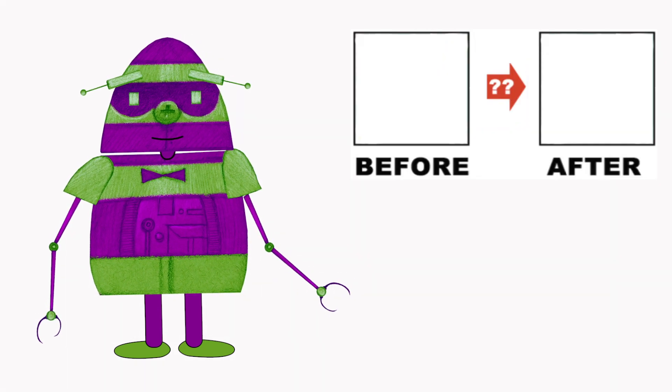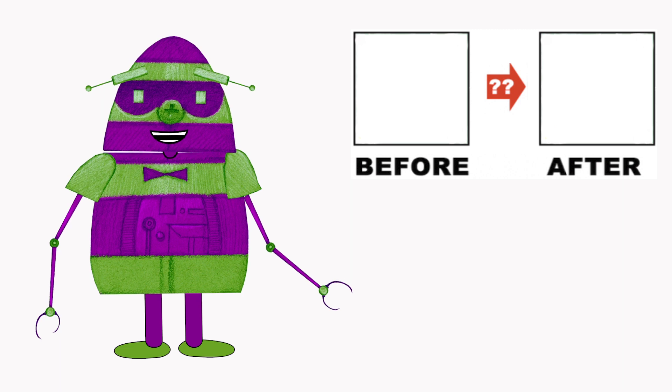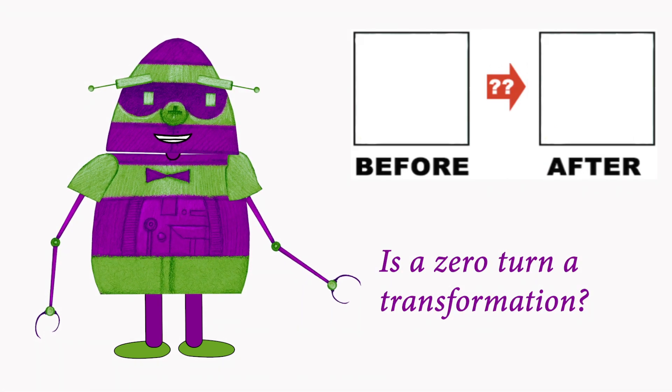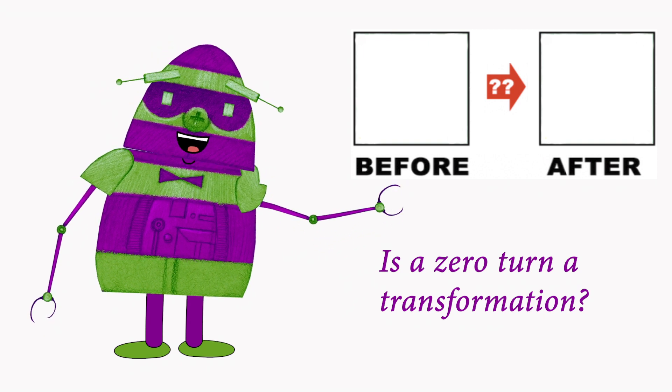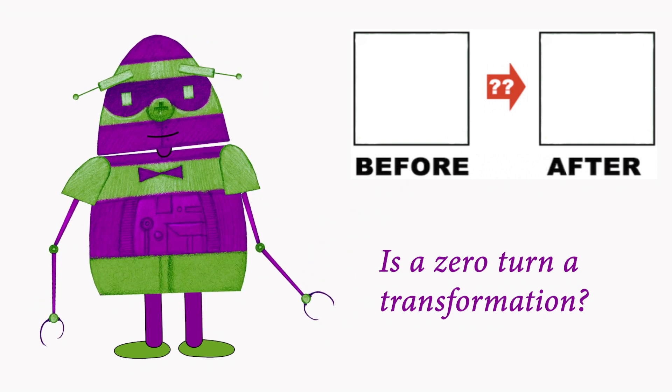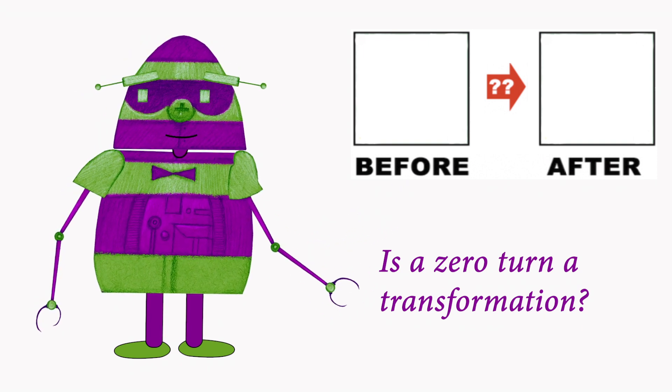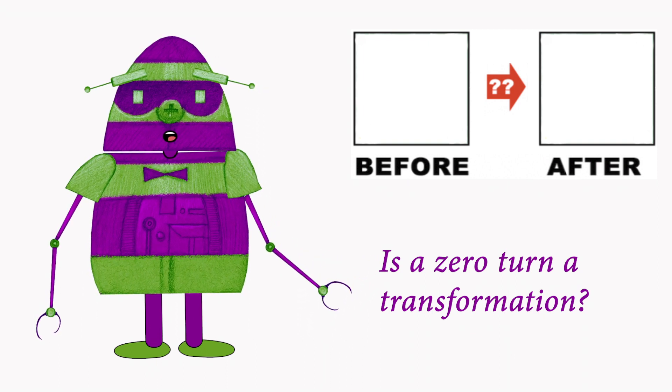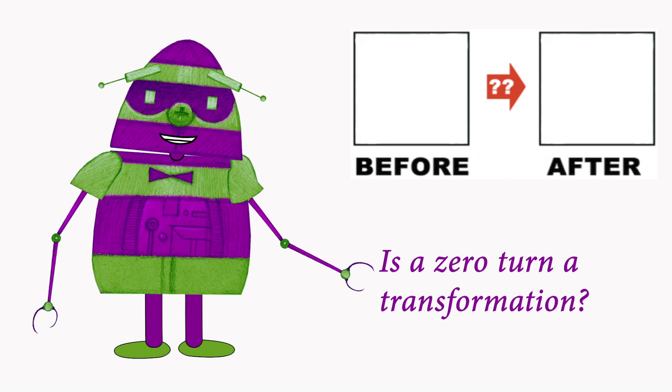Or maybe I rotated the square as zero turn, or zero degrees. A zero turn does not do anything to the square. Can we still call it a transformation? It's similar to adding zero to a number, so I think it's fine. Adding zero is still an operation even though it does not change the number.